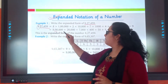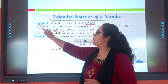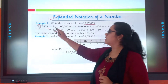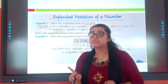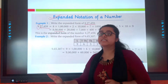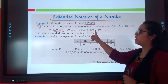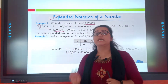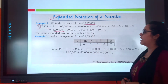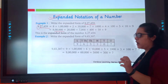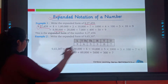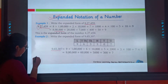I will add 8 lakh plus 20 thousand. Now 2 stands at the 20-thousands place, so 20,000. 7 stands at the thousands place, so 7 into 1,000 equals 7,000. 4 stands at hundreds, so 400. 5 stands at tens, so 50. 9 stands at ones, so I will add 9. Understood? Let's have one more example and solve it together.